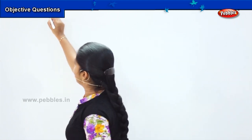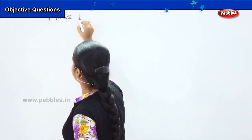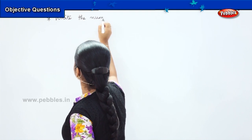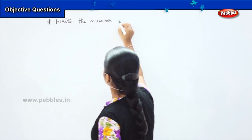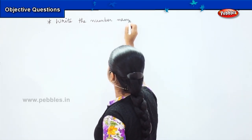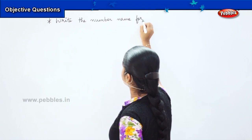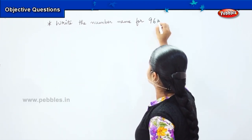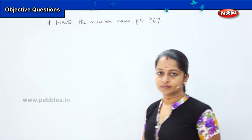Now I am going to ask you a few more questions on the same pattern, which is the number name pattern. Here comes our next question. My question is: what is the number name for the number 967?